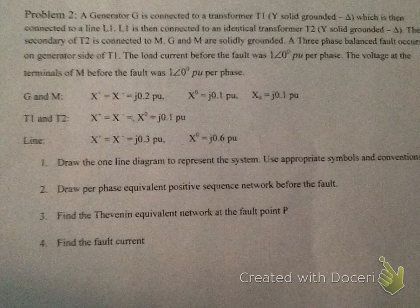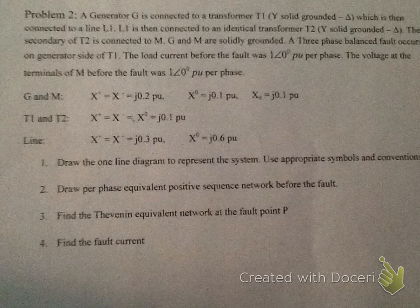We'll be solving problem 2 from the tutorial from the week of March 31 to April 3rd. The problem is: a generator G is connected to a transformer T1. T1 has a Y solid ground primary and delta secondary, connected to line L1. L1 connects to an identical transformer T2. The transformer secondary of T2 is connected to motor M. G and M are solidly grounded. A three-phase balanced fault occurs on the generator side of transformer T1. The load current before the fault is 1 per unit per phase, and the voltage at the terminals of M before the fault was 1 per unit per phase.